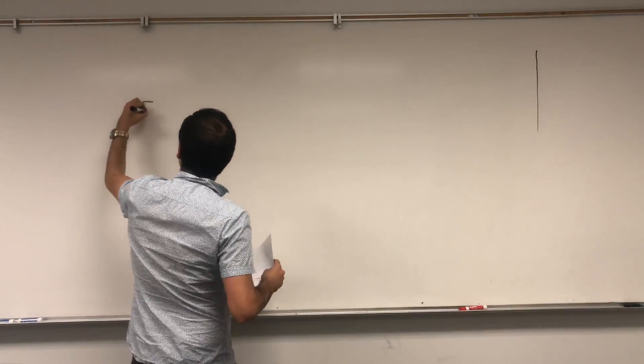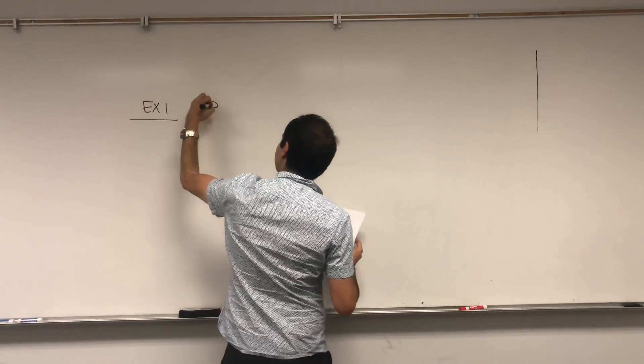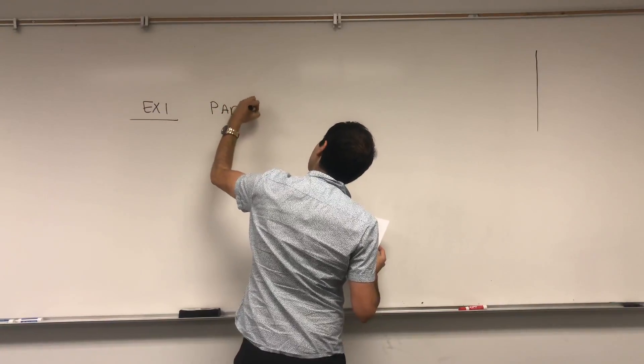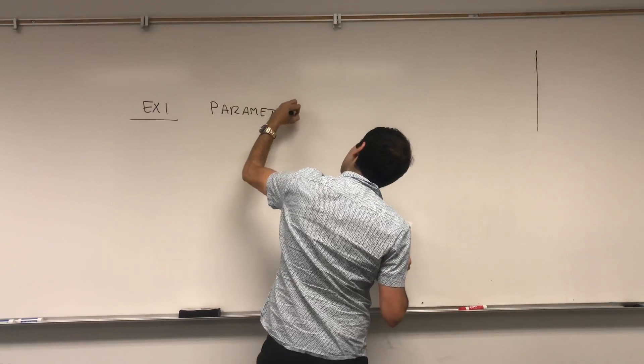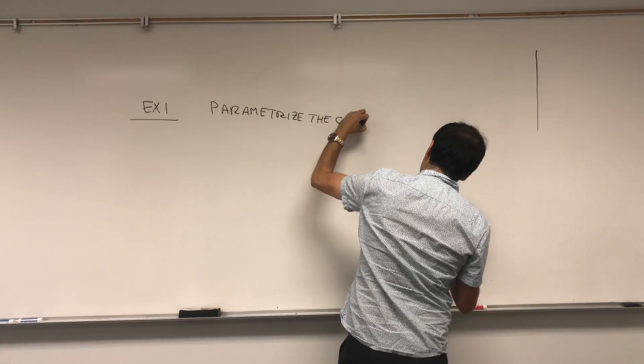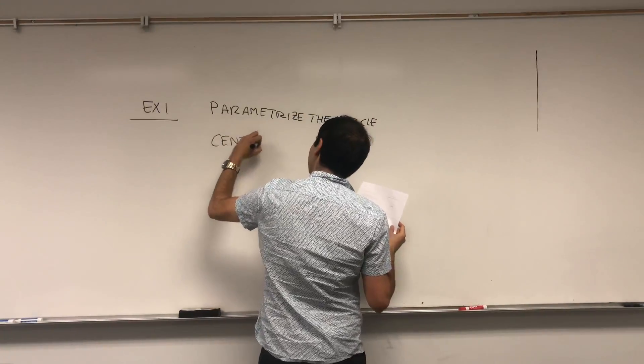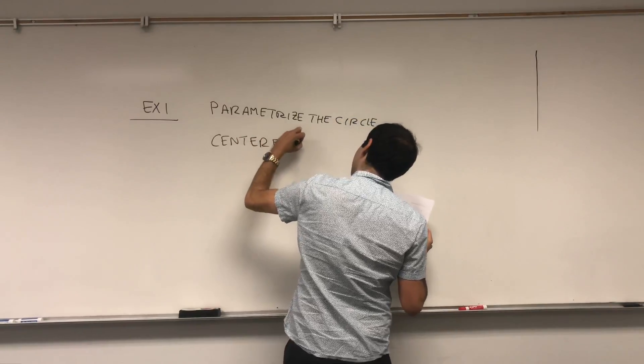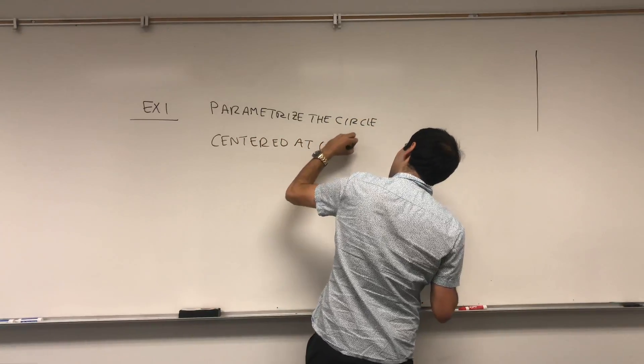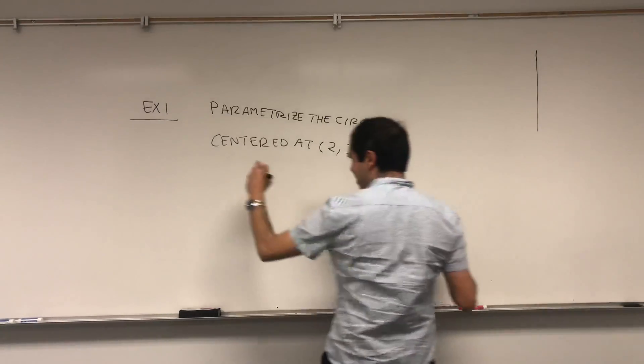So, first of all, maybe the most important parametrization: parametrize the circle centered at 2, 3—sorry, not 2, 0—2, 3, and I was very clever, 2, 3, 4, so odd, and radius 4.